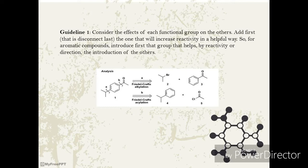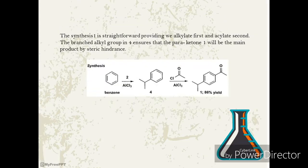Friedel-Crafts alkylation A would work reasonably well with the secondary alkyl halide 2, but the ketone in 3 is meta-directing and would give the wrong product. Friedel-Crafts alkylation B would give the right product as the M group in 4 is ortho-para-directing. Further, the alkyl group in 4 is activating while 3 is deactivating. The synthesis 1 is straightforward providing we alkylate first and acylate second. The branched alkyl group in 4 ensures that the para-ketone 1 will be the main product by sterics.